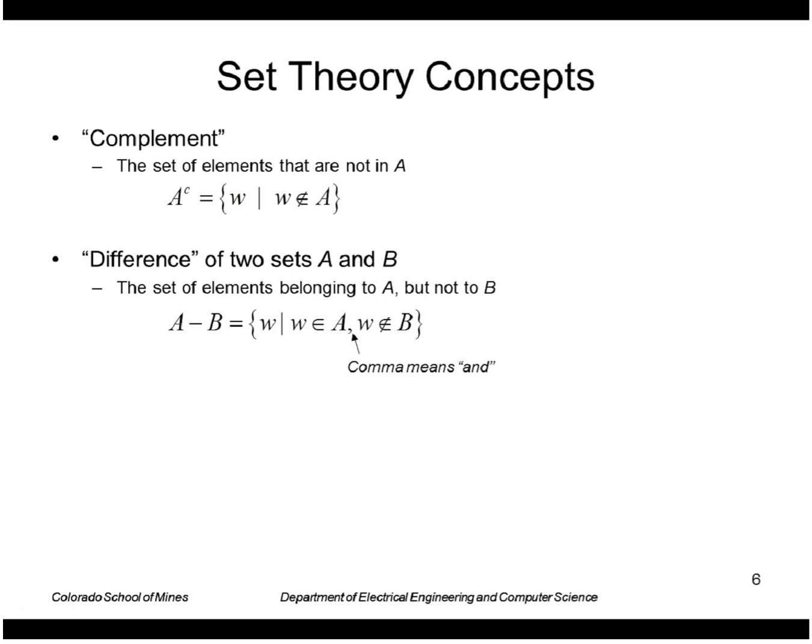The set difference of two sets A and B is the set of elements belonging to A but not to B. The subset is written when every element of A is also in B. And finally the empty set is the set of no elements and has this symbol here.